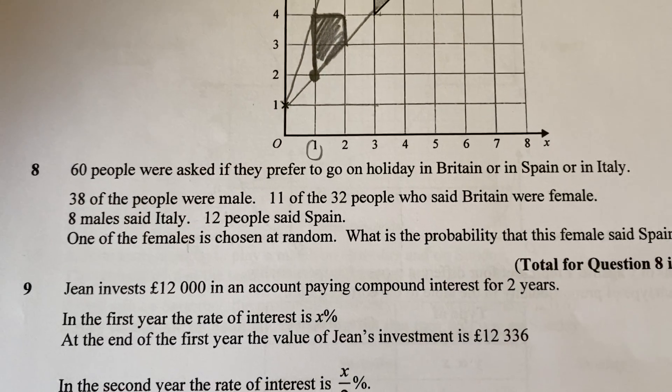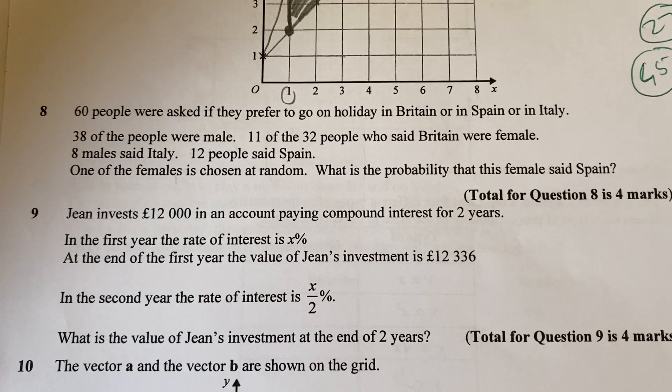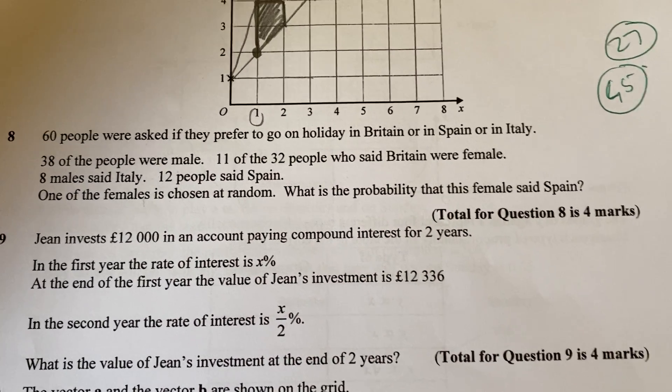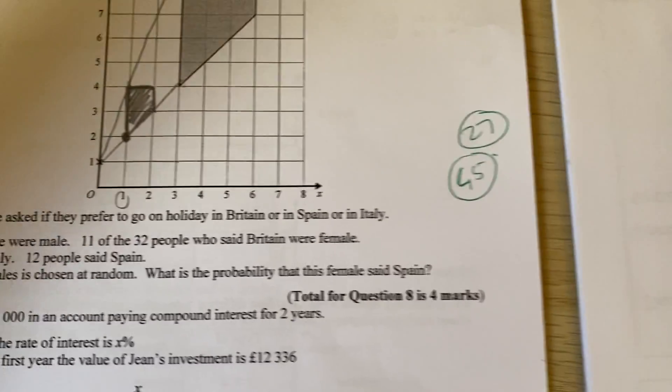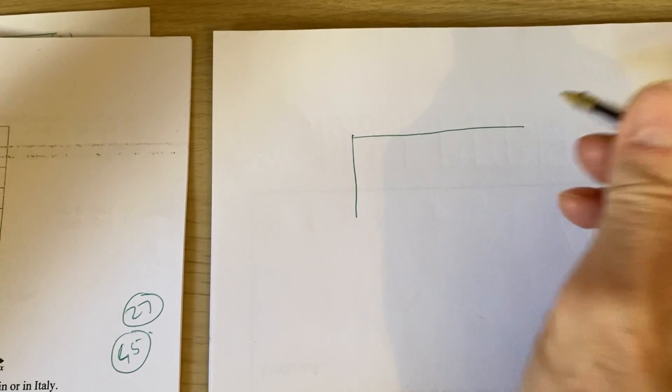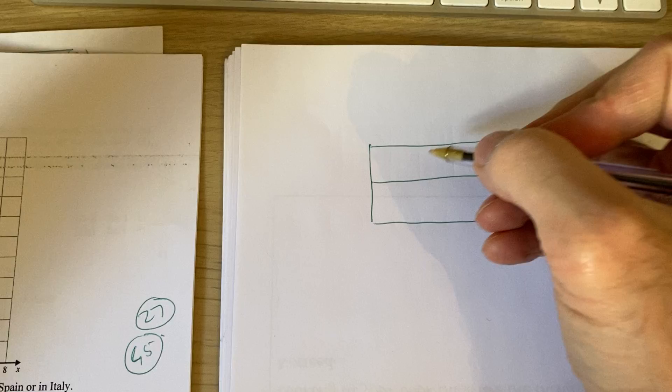It says here, 60 people were asked if they prefer to go on holiday in Britain or Spain or Italy. 38 were male, 11 of those were female. Okay, so what this means is we're going to have to do a table here. This is the best way to do this. And we've got three options, haven't we, of where they go and we're looking at male against female.